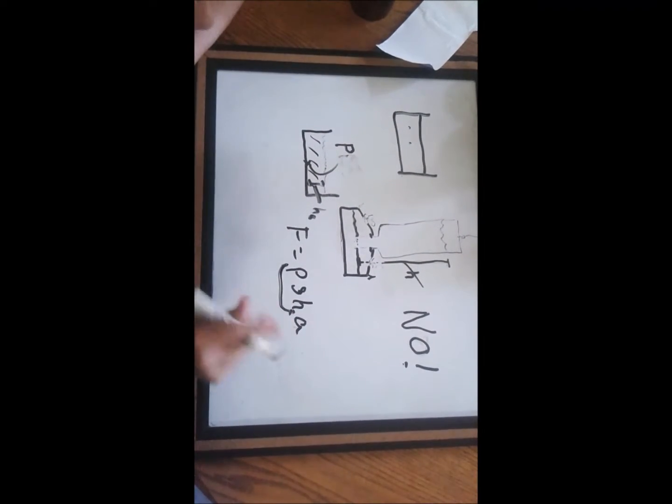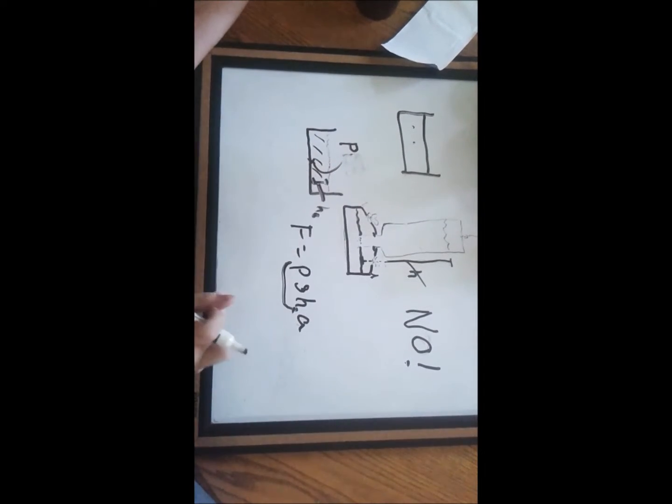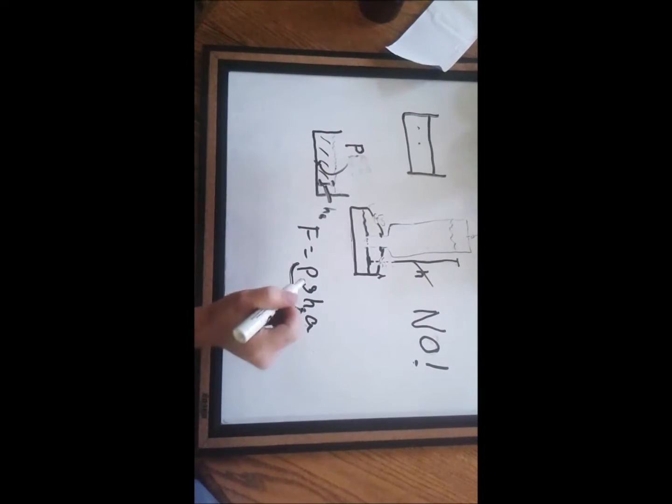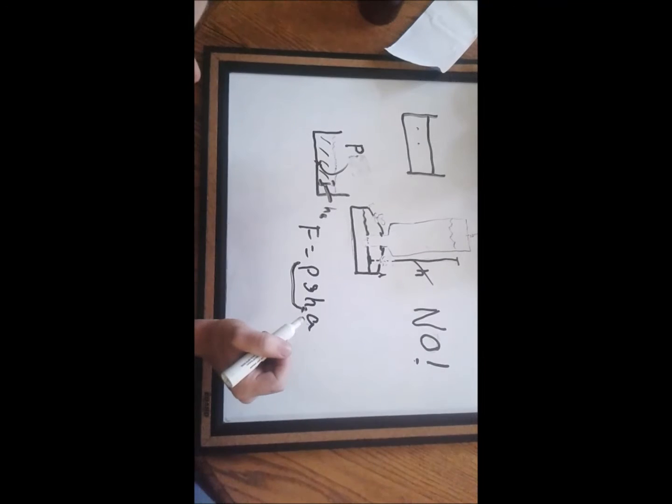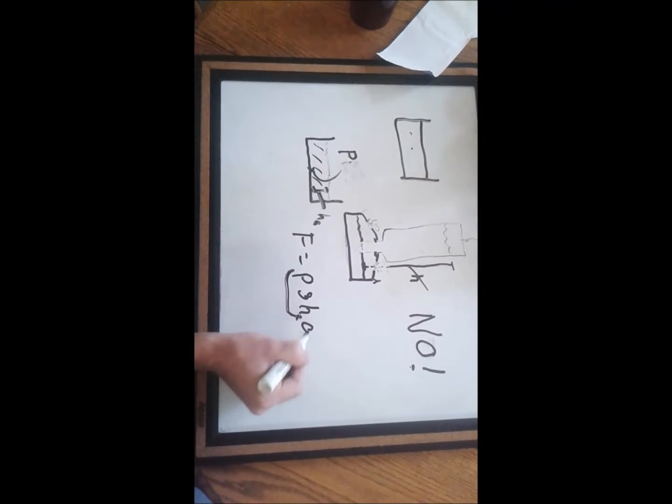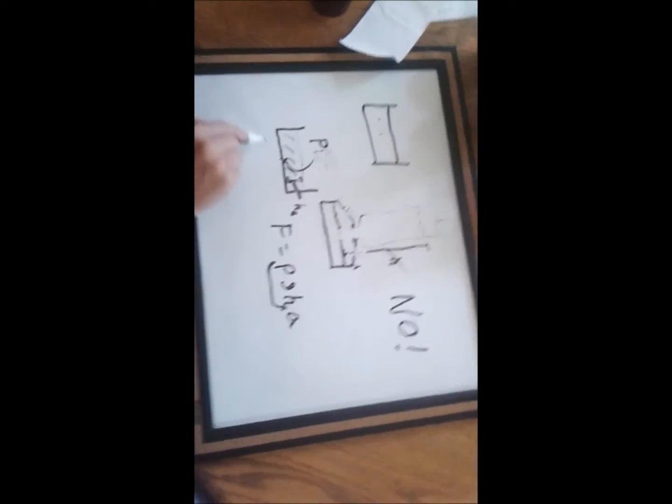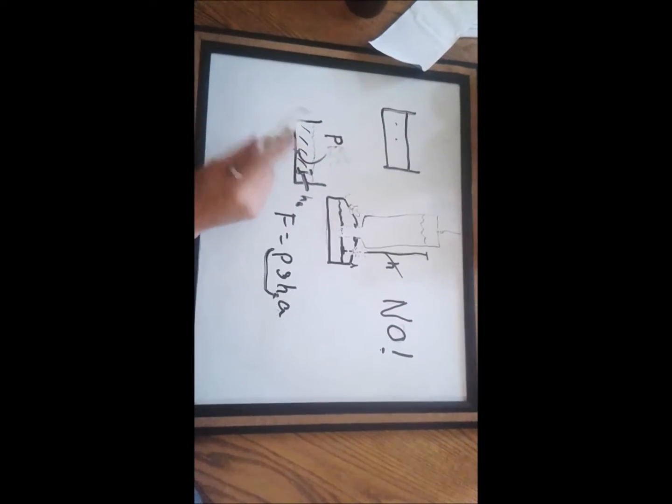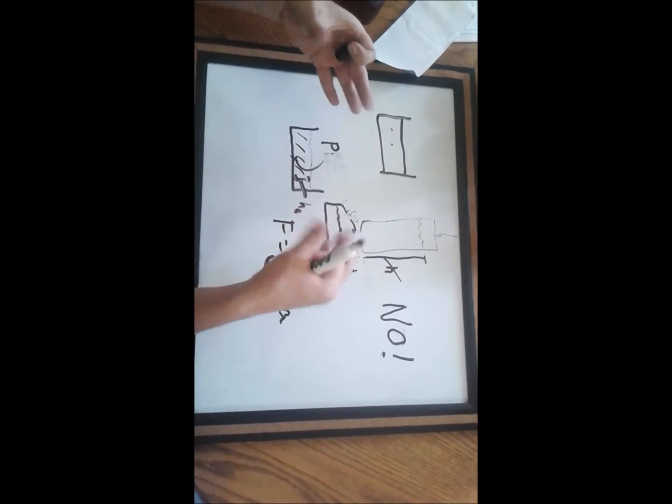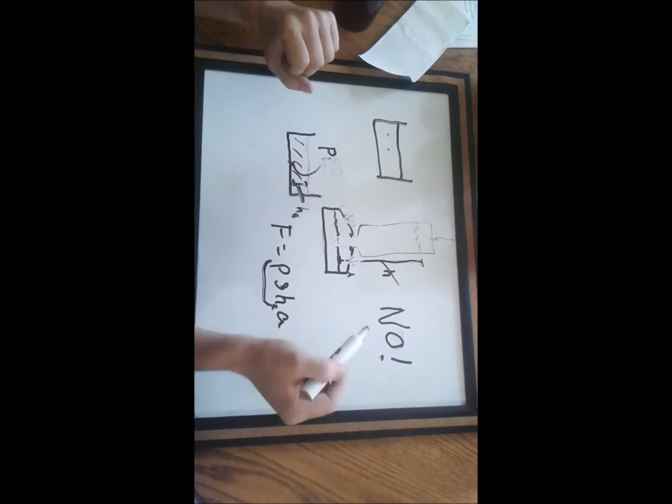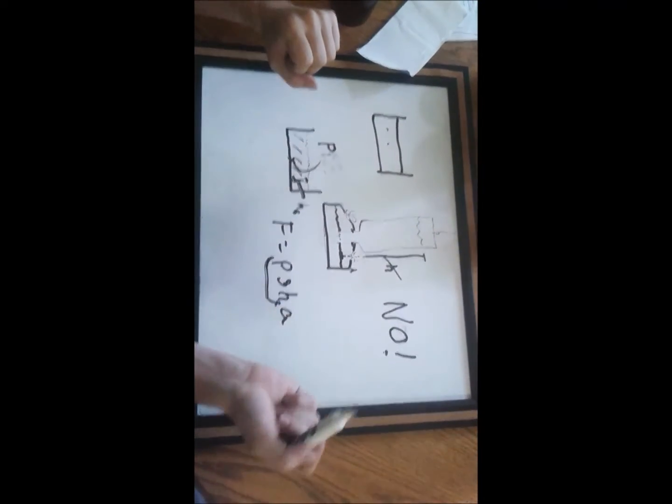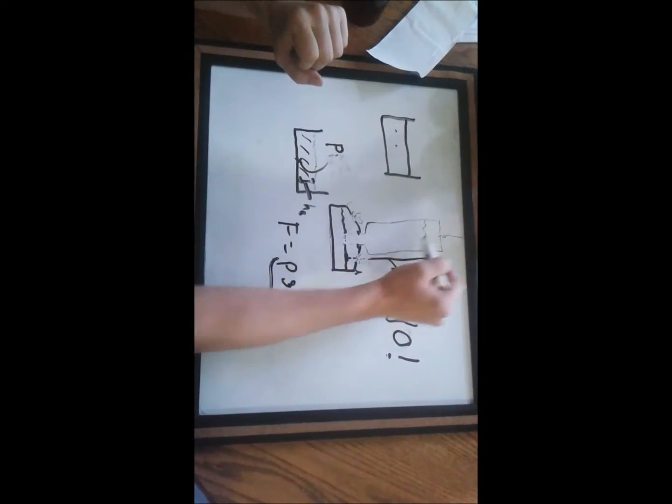So I'll put a little 2 in here to indicate that I'm talking about this height. And then pressure times area is force. So this little term right here is just going to be the area of the bottom of the container. So what does matter is the dimensions of the container that the birds are drinking out of, but not the dimensions of the reservoir.